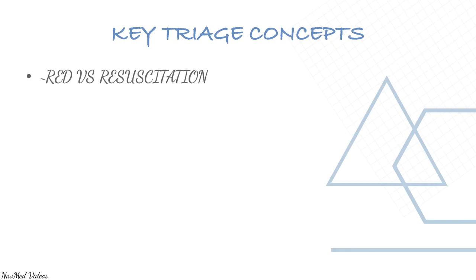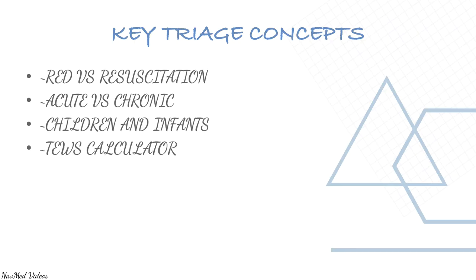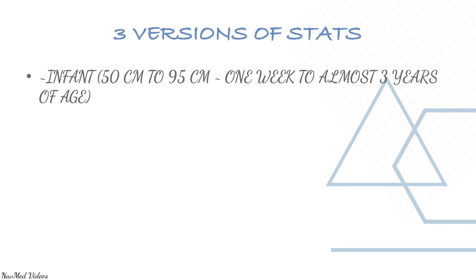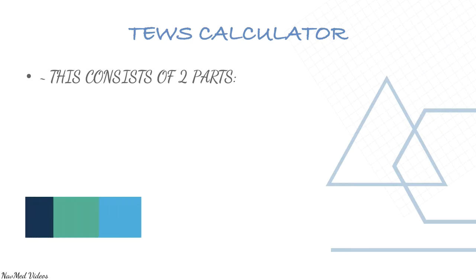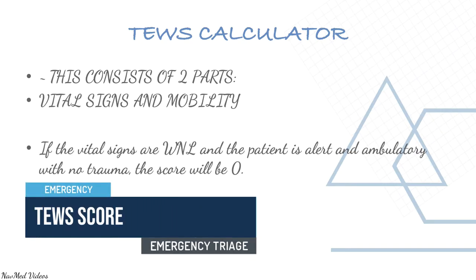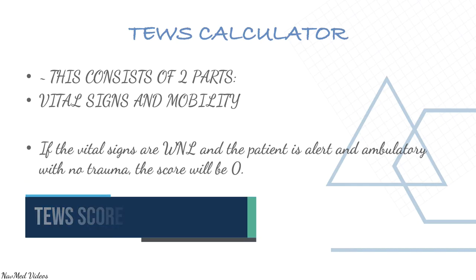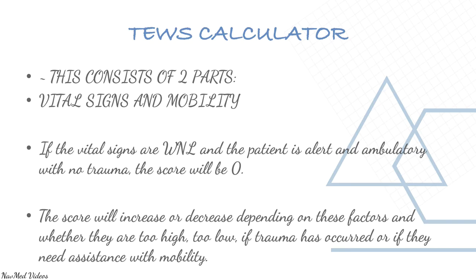Key concepts in triage include: rate versus resuscitation, acute versus chronic, children and infants, and the TWOS calculator. The TWOS consists of two parts — vital signs and mobility. If the vital signs are within normal limits and the patient is alert and ambulatory with no trauma, the score will be zero. The score increases or decreases depending on whether values are too high, too low, whether trauma has occurred, or if the patient needs assistance with mobility.